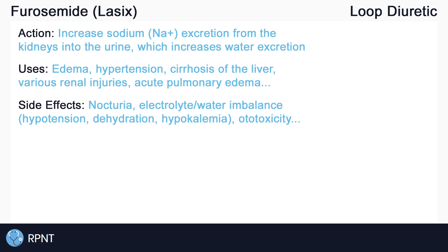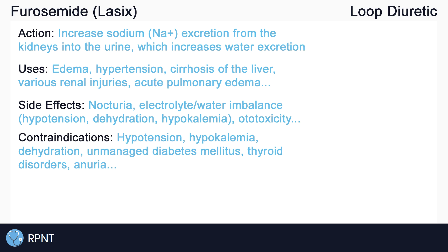Because of the many side effects, there are some cases where we want to avoid the use of furosemide. For example, we want to avoid furosemide in clients with hypotension, electrolyte imbalances such as hypokalemia, dehydration, unmanaged diabetes mellitus, thyroid disorders, and more. Furosemide is also contraindicated in clients who have very little to no urine output, also known as anuria, which is indicative of a urinary obstruction.